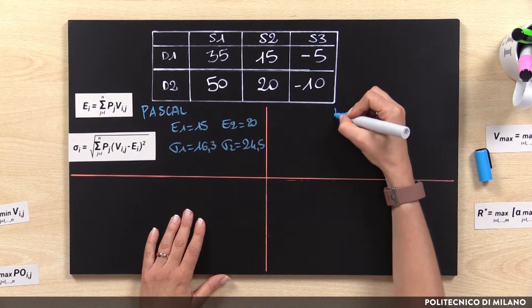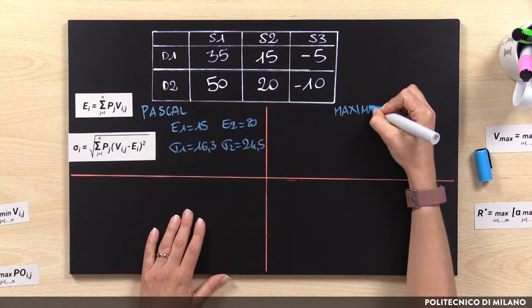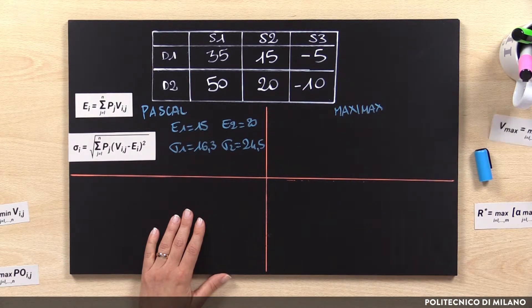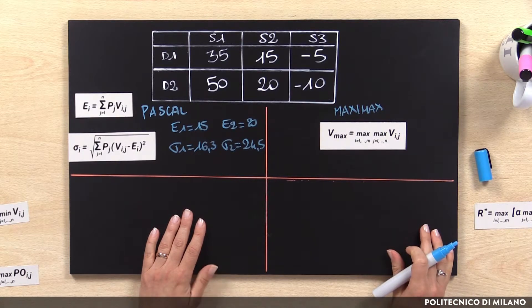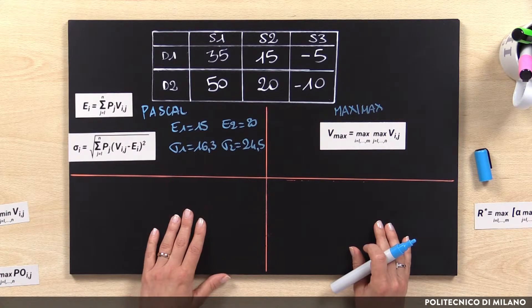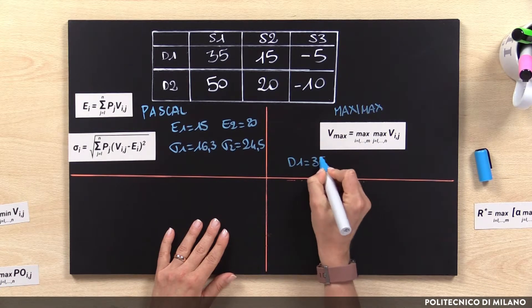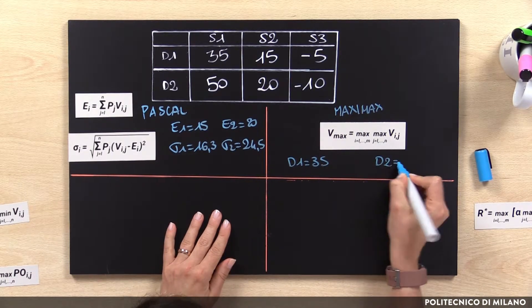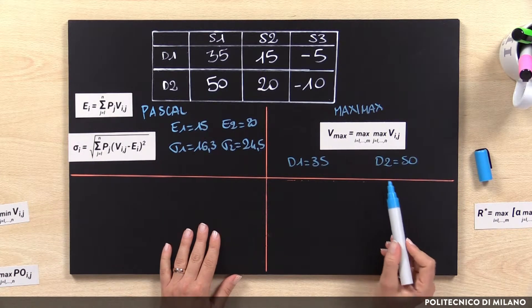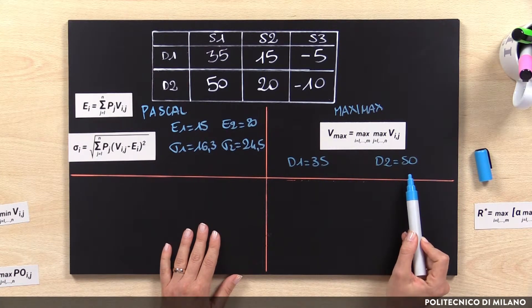The second criterion is called Maximax. This is the typical approach used by optimistic people because it aims at selecting the best payoff for each alternative, independently of which scenario is going to happen, and then the best of the best is taken as the decision. The basic assumption is that the best scenario will for sure happen. In our example, for D1 the best option is 35, and for D2 the best option is 50. Between 35 and 50, the maximum is 50, so the decision maker prefers D2.